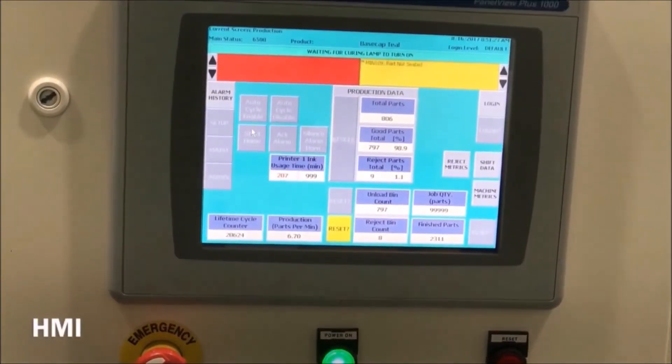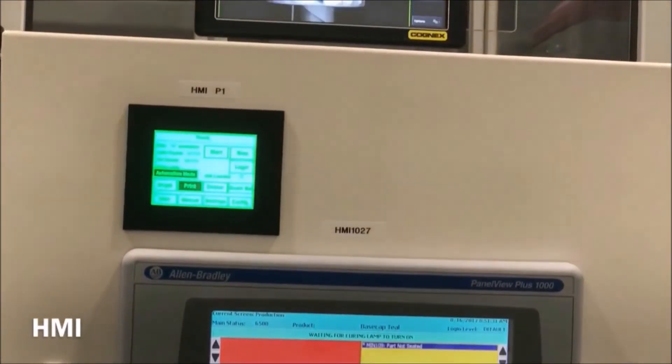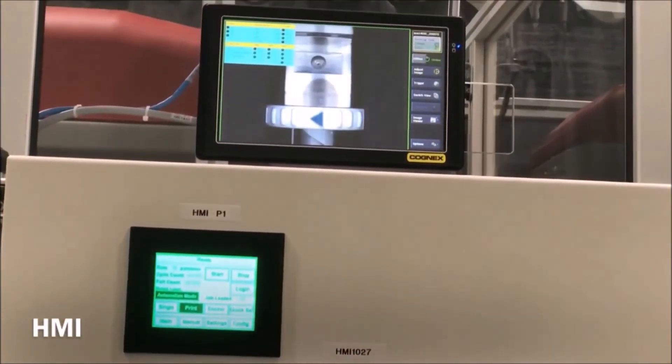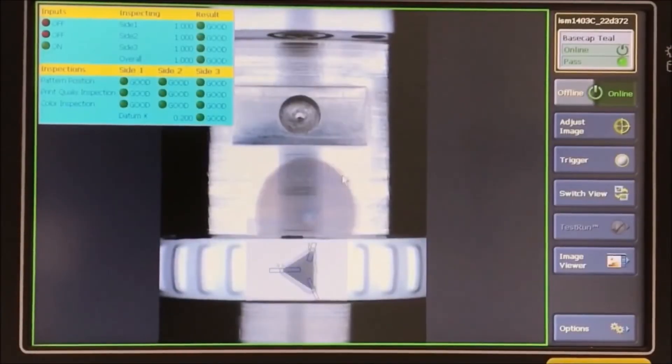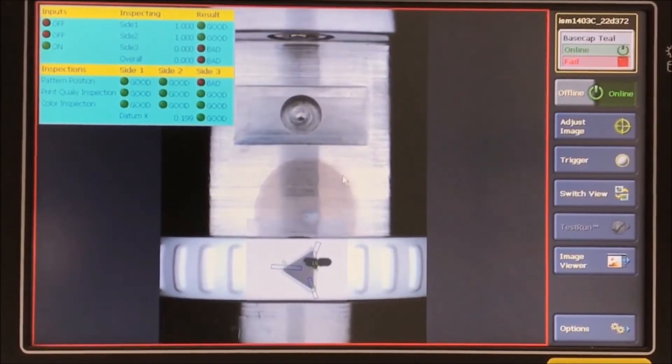The HMI is basically the brains of the system. It controls all the various stations throughout. It can also keep track of parts, rejects, and other instructions from the administrator.